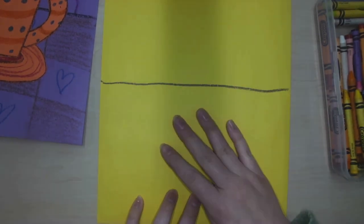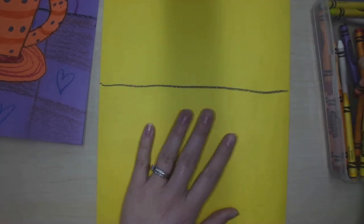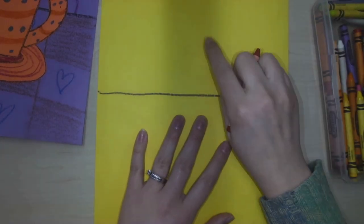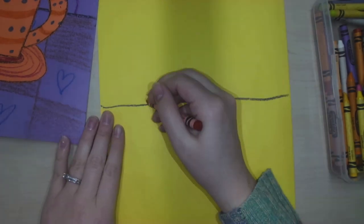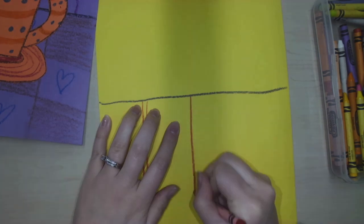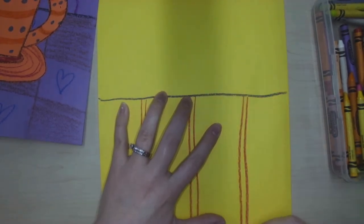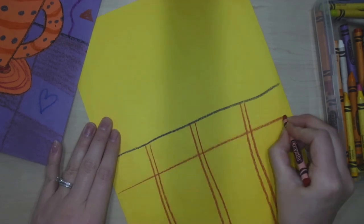Think of all the different things that you can use to make your patterns. Lines, shapes, designs, swirls. Maybe you want to combine different patterns together. Once you're ready, go ahead and decorate your background in two different big patterns.